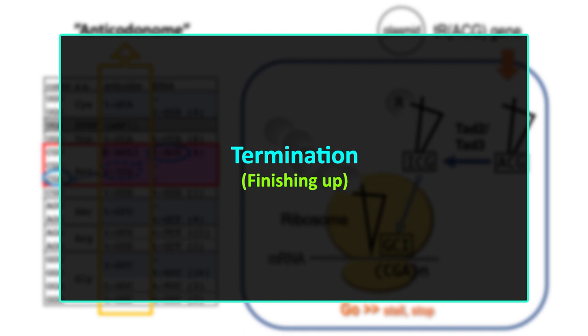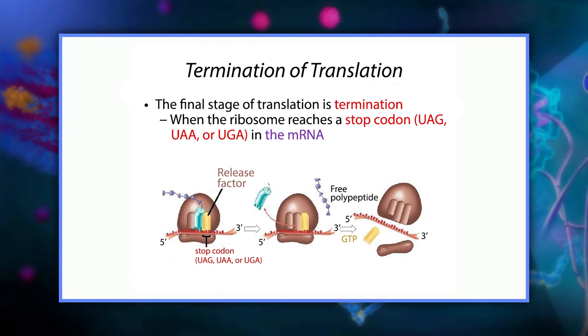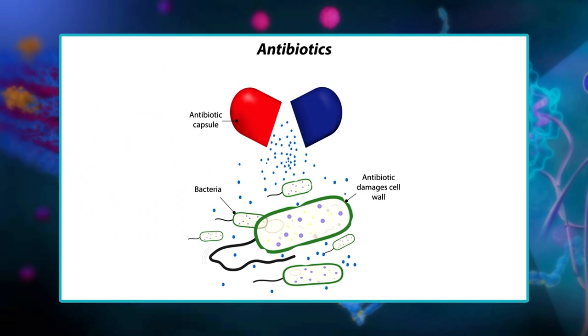Termination is the stage in which the finished polypeptide chain is released from the ribosomes. It begins when a stop codon — UAG, UAA, or UGA — enters the ribosome, triggering events that separate the chain from its tRNA and allow it to drift out. After termination, the polypeptide may still need to fold into the right 3D shape, undergo processing such as removal of amino acids, get shipped to the right place in the cell, or combine with other polypeptides before it can function as a protein.